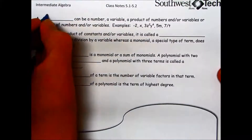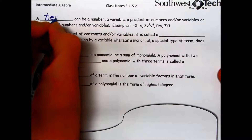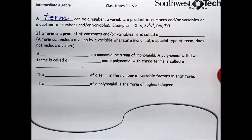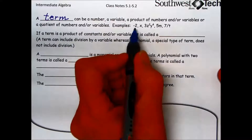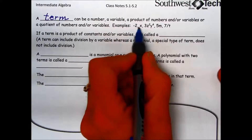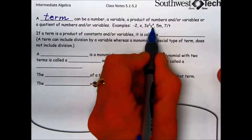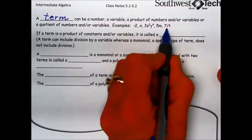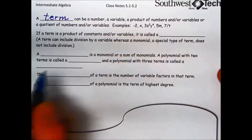The first term to define is a term. A term can be a number, a variable, a product of numbers and/or variables, or a quotient of numbers and/or variables. Here are some examples: a number, a variable, a product, another product, or a quotient.